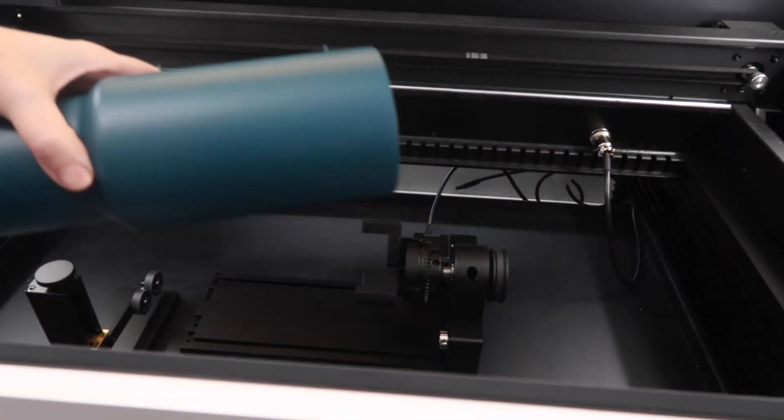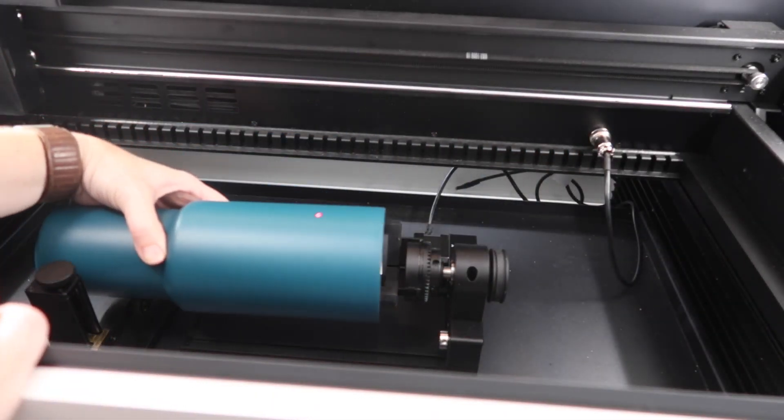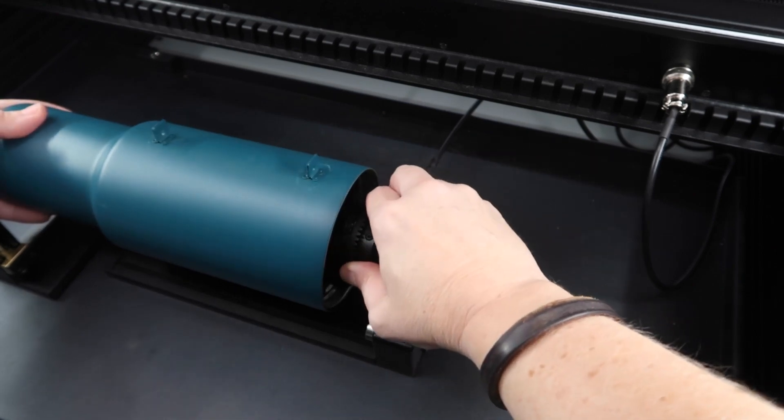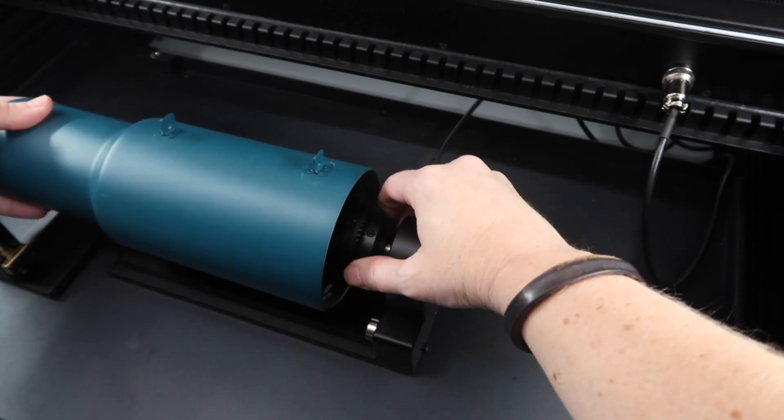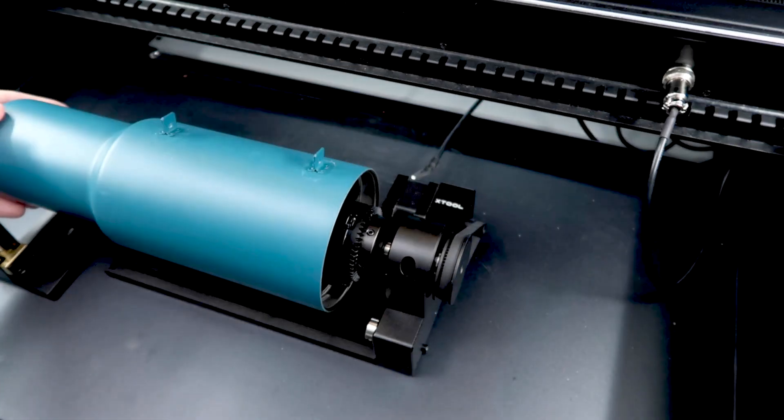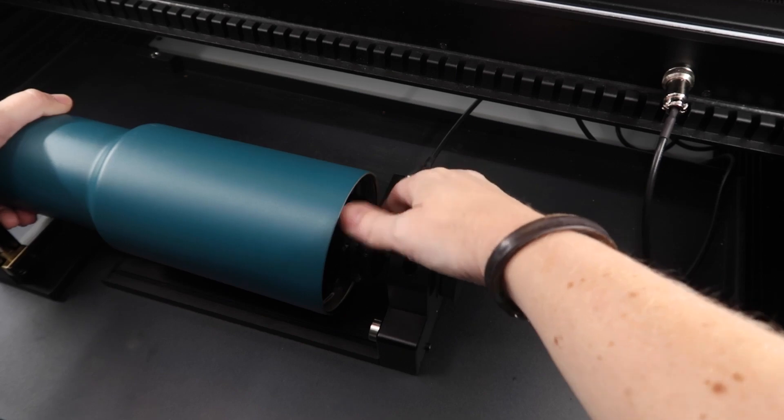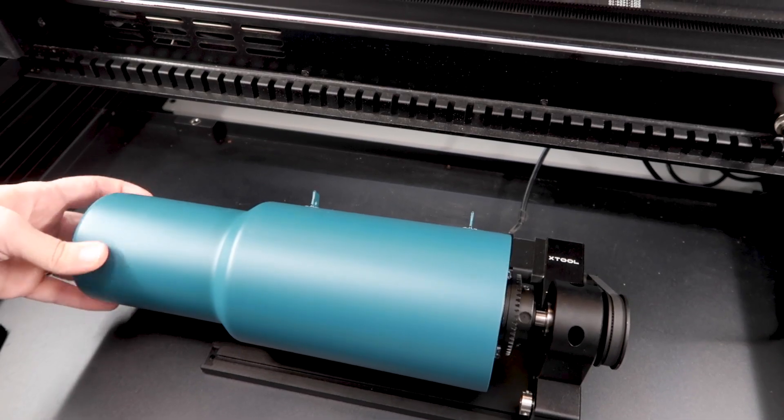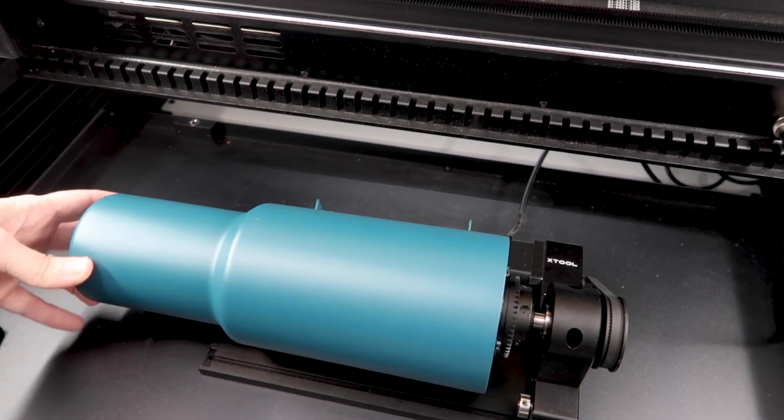Slide the tumbler on the chuck and twist to tighten the grippers inside the tumbler. You want these to hit just below the threads of your tumbler. Once you get it in tight, turn your tumbler to see if it's wobbling when it rotates. If it spins unevenly, you want to adjust the position and try again until it rotates smoothly all the way around.